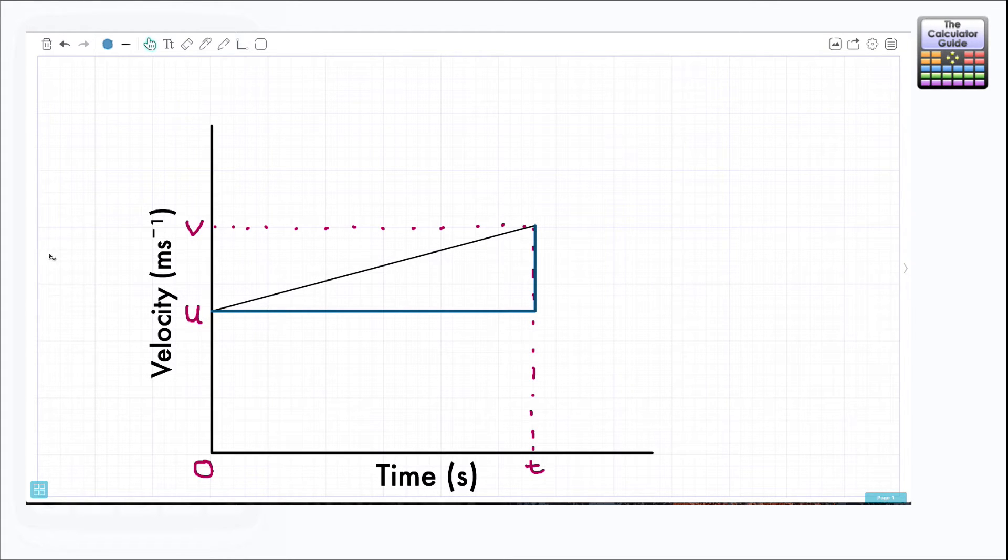In order for us to be able to work that out we can do so by finding the gradient of this particular slope. So what I'm going to do is just draw a right angle triangle underneath the slope here so that we can try and work out what the gradient is using the letter values that we have here.